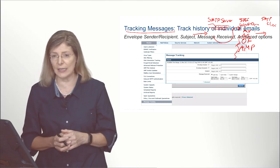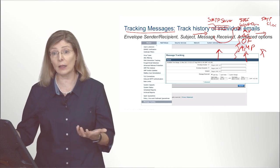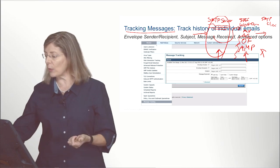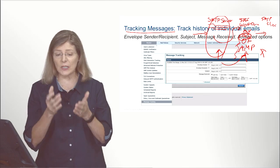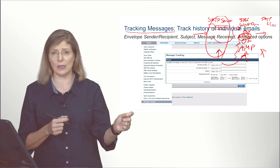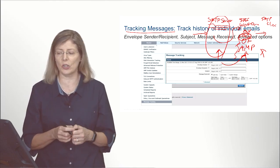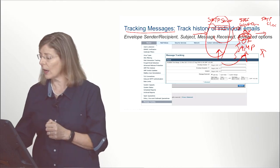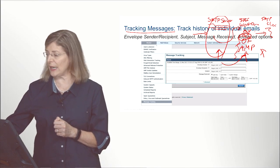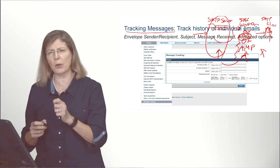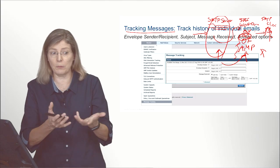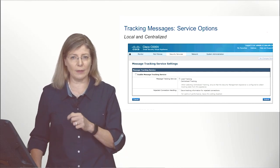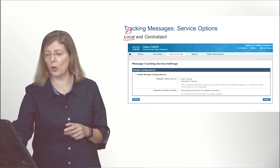If someone calls saying they didn't receive an email, you're trying to find out where that email is stuck. Maybe it was not accepted from the get-go because the sender's domain has a bad reputation. Maybe it was accepted but anti-spam flagged it as suspect spam and put it into quarantine — in which case you can tell the user to log into their spam quarantine and look there. Or maybe the email was processed and released, but the problem is with the Exchange server that dropped the ball.